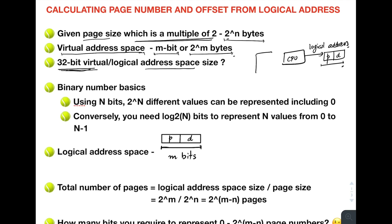The logical address is also a number. If you remember, a process is divided into logical addresses from 0, 1, 2, 3 till max. These logical addresses are some numbers, and they require storage space. Logical addresses are normally stored in registers — the program counter is one of them — and that is stored in a register along with the CPU.